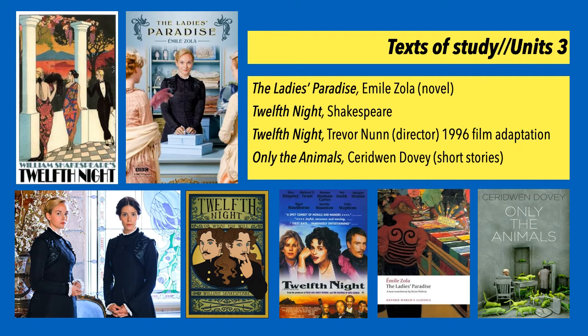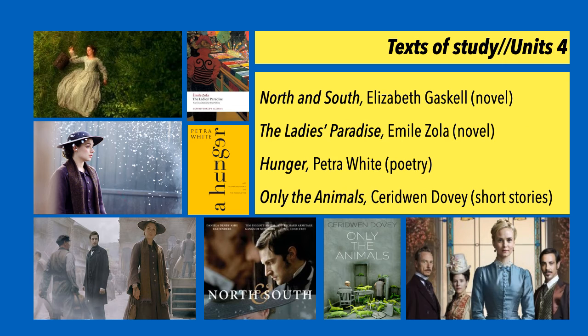The first assessment task for Unit 3 is to compare a film adaptation to the original play, and the second task is to write a creative piece in response to your chosen text. These are the texts for Unit 3 and some of these are also studied in Unit 4.